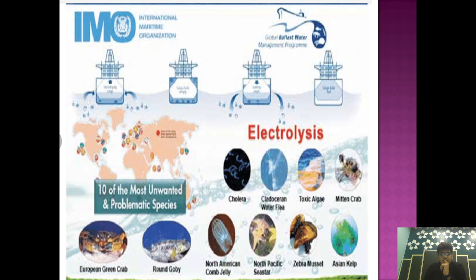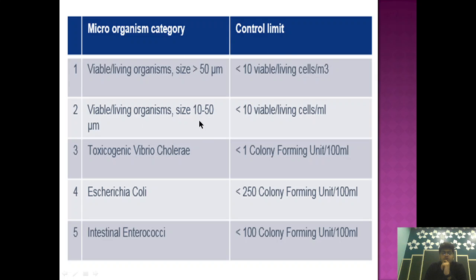This chart will give you a clear idea. Basically, if we have a Ballast Water Treatment System on board and we are carrying out ballast water management as per the Ballast Water Management Plan, the ballast water being delivered or taken in or out from the ship should not contain more than 10 viable organisms per meter cube if its dimension is greater than or equal to 50 micrometers.